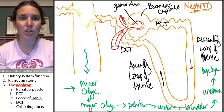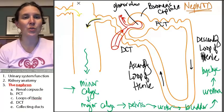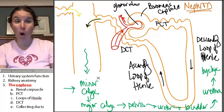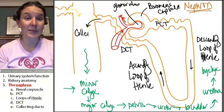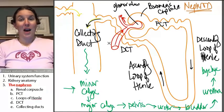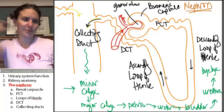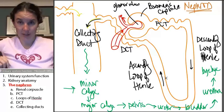And then distal convoluted tubule dumps pre-pee into this tube that's collecting pre-pee from all the nephrons in the area. And so it's called the collecting duct. I love nephrons. Thank you, nephrons. All right. What do you not know at this stage of the game? Where is this thing located?